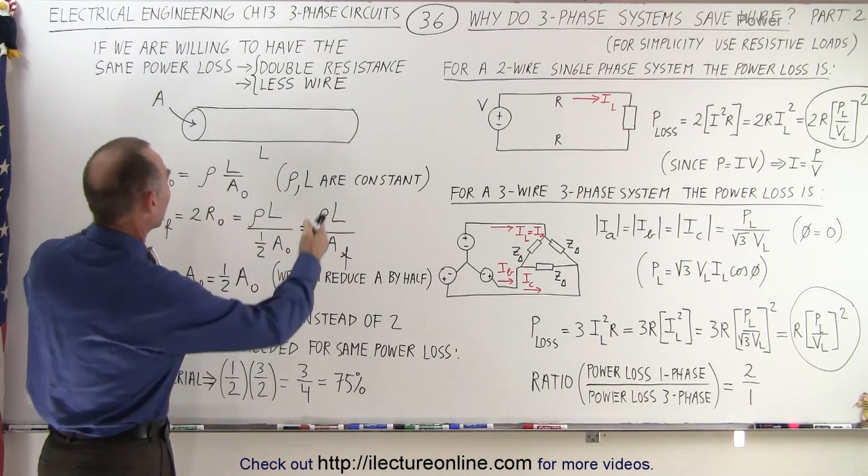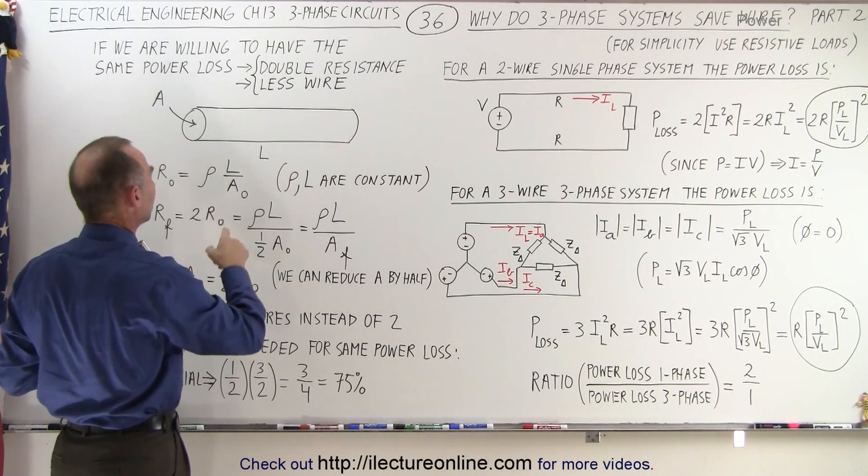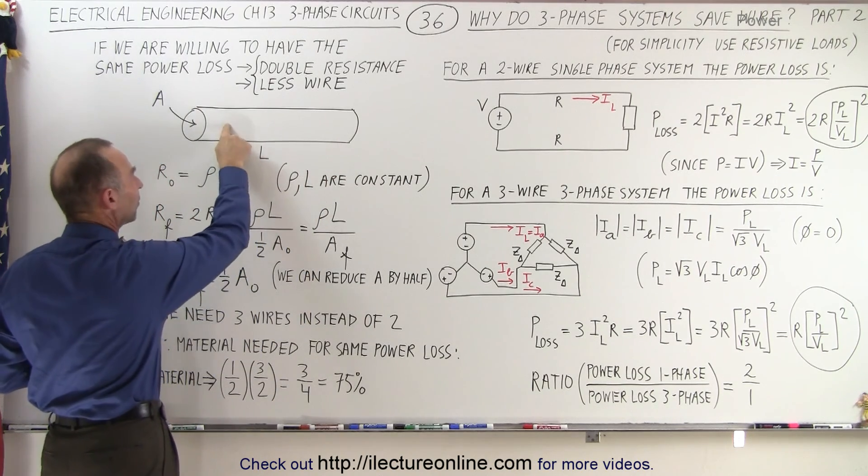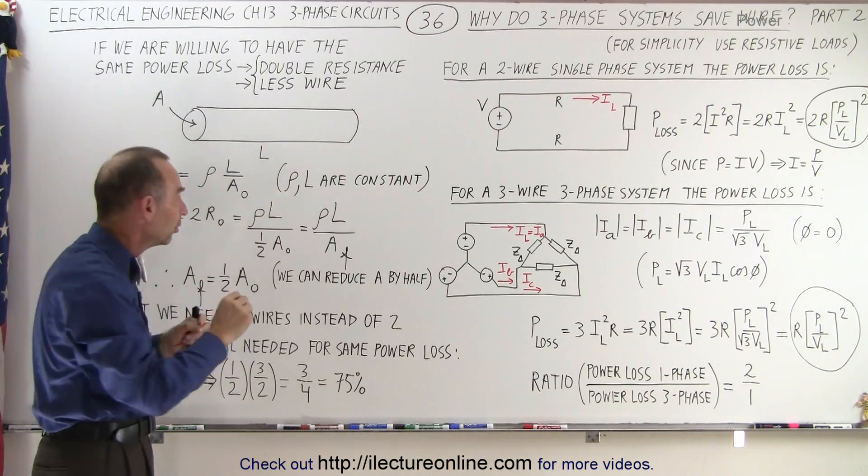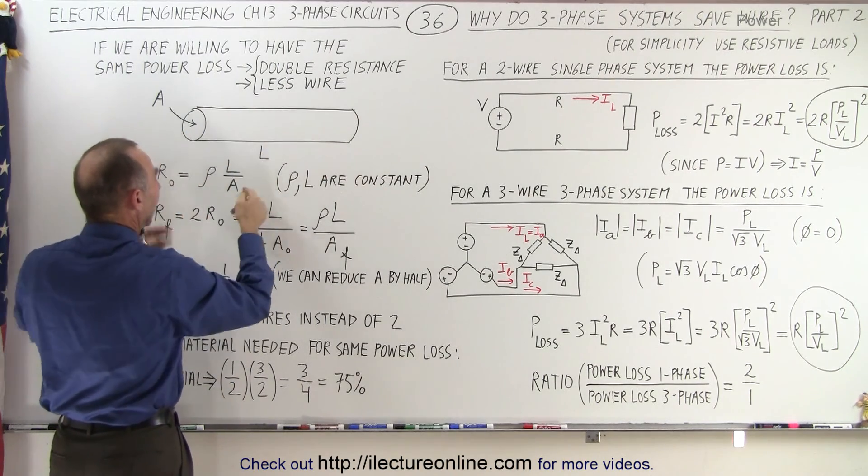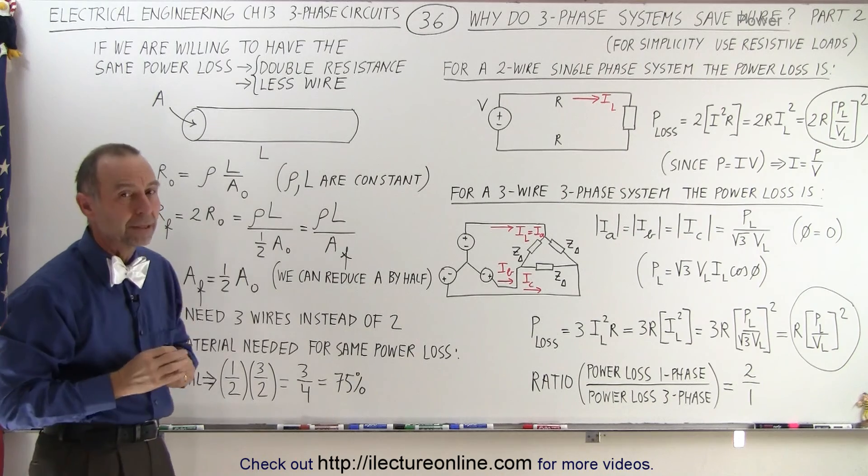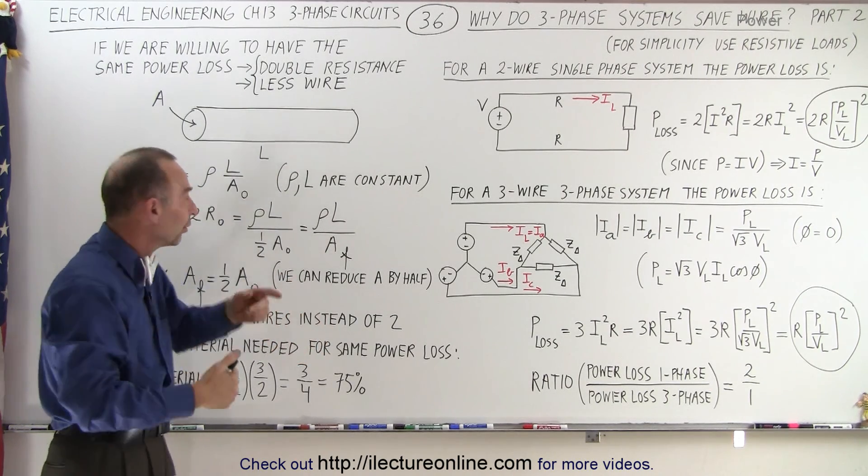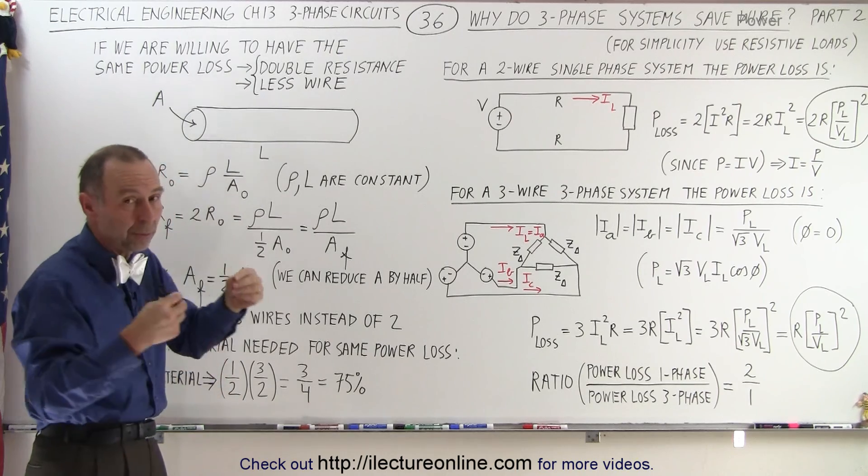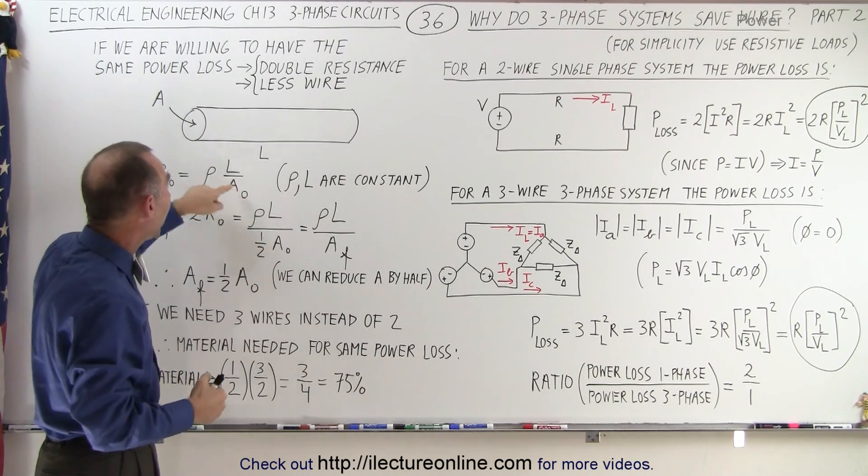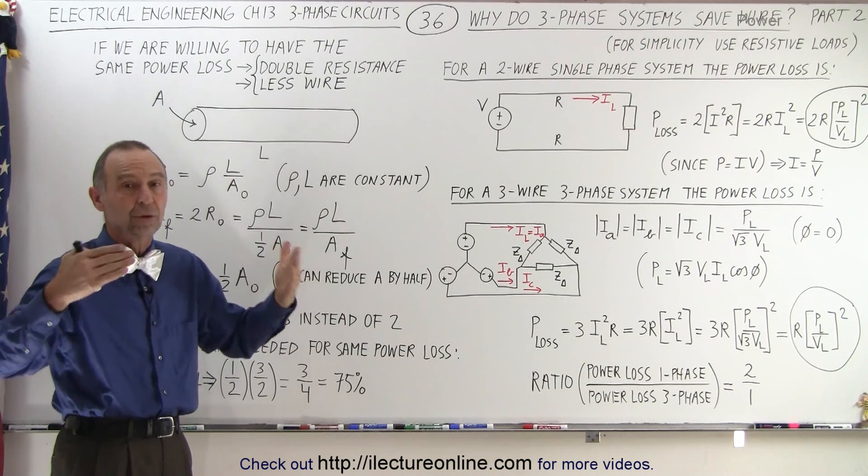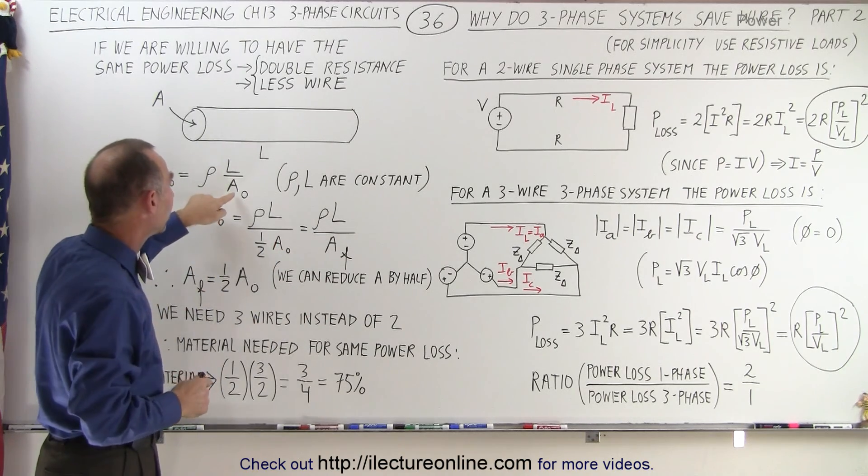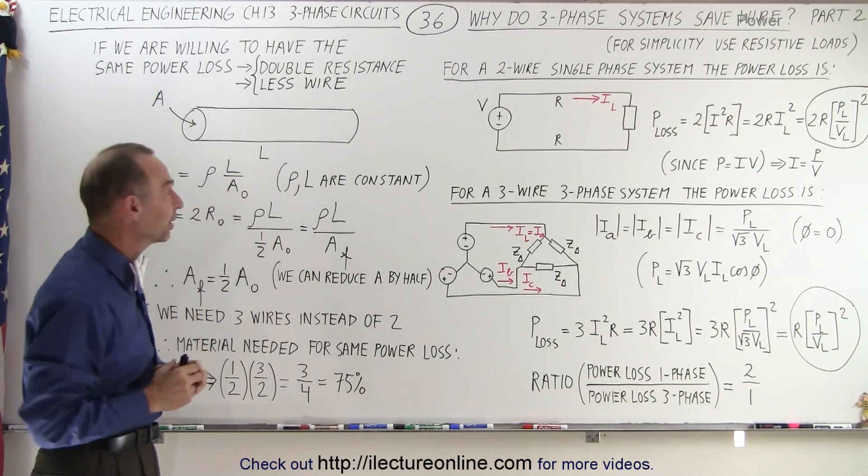If we take a look at it, the resistance of a wire is determined by three things: the resistivity of the material, the length of the wire, and the cross-sectional area. Now in this particular case, if a system is already set up, we don't have a choice on the resistivity or the length. We can only play around with the cross-sectional area.